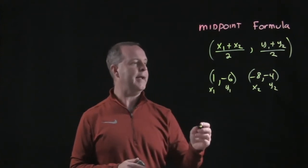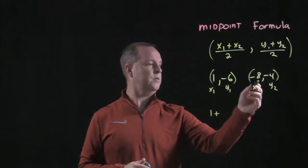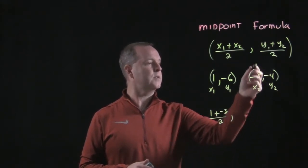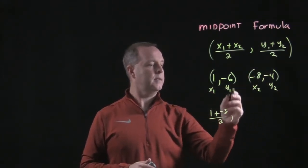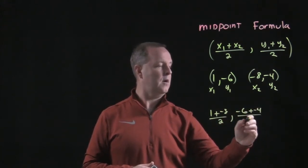From there, let's plug and play. So it's 1 plus x2, which is -8, divided by 2. The second coordinate is y1, -6, plus -4, all over 2.